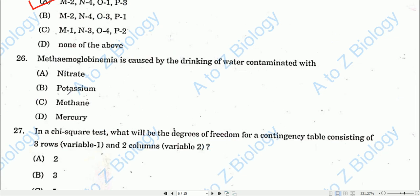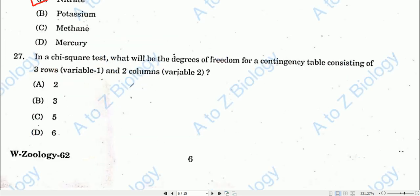Question number twenty-six: Methemoglobinemia is caused by drinking water contaminated with nitrates. Option A will be the correct one.